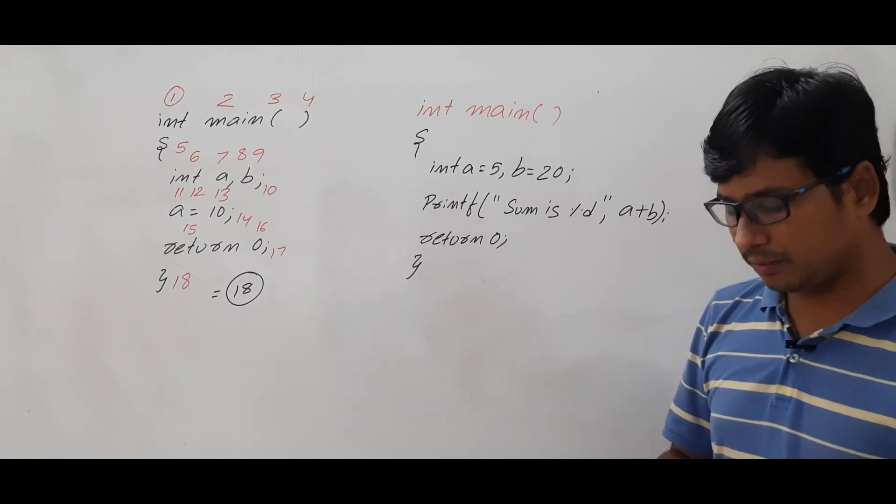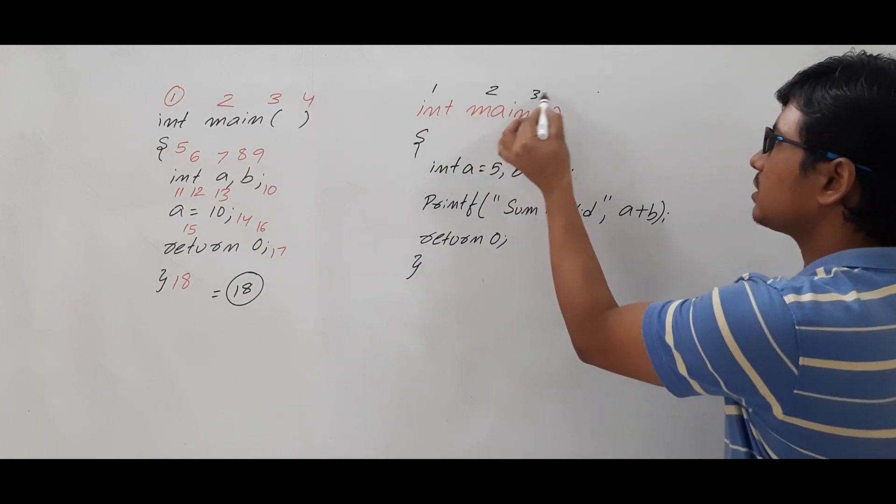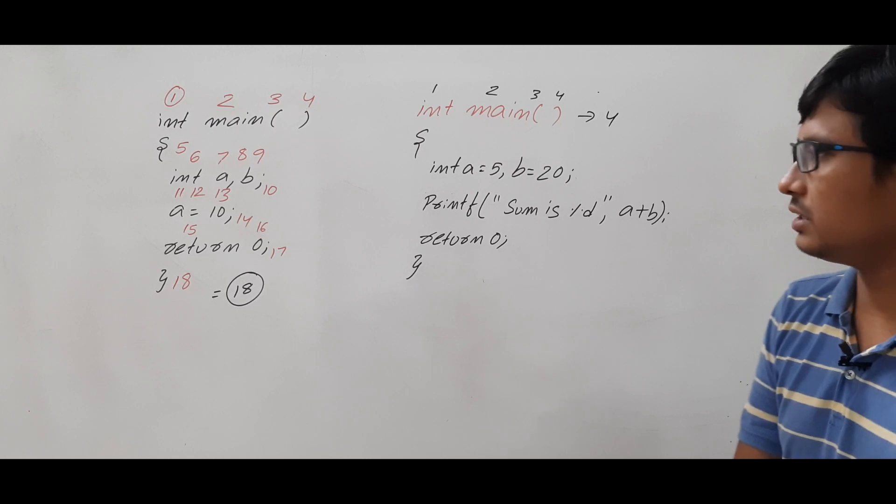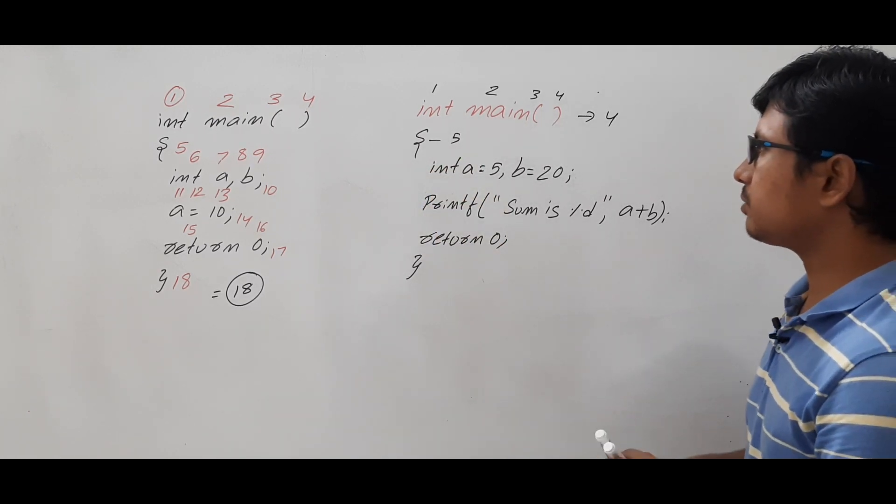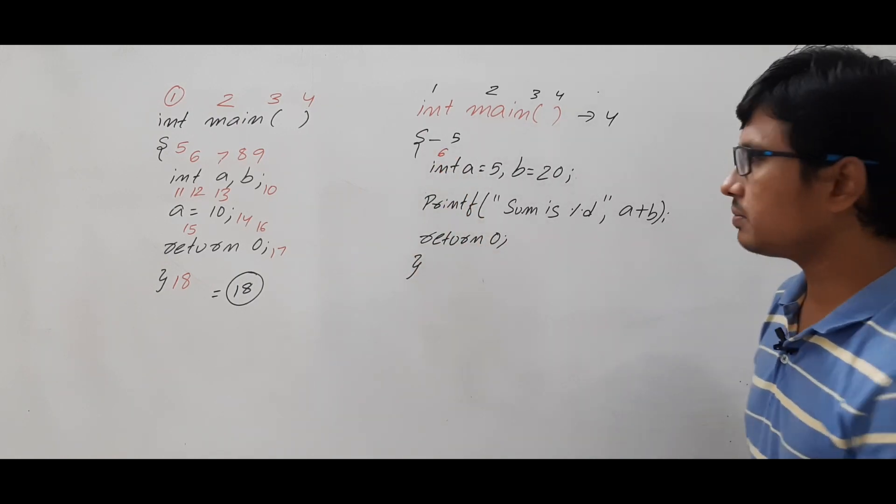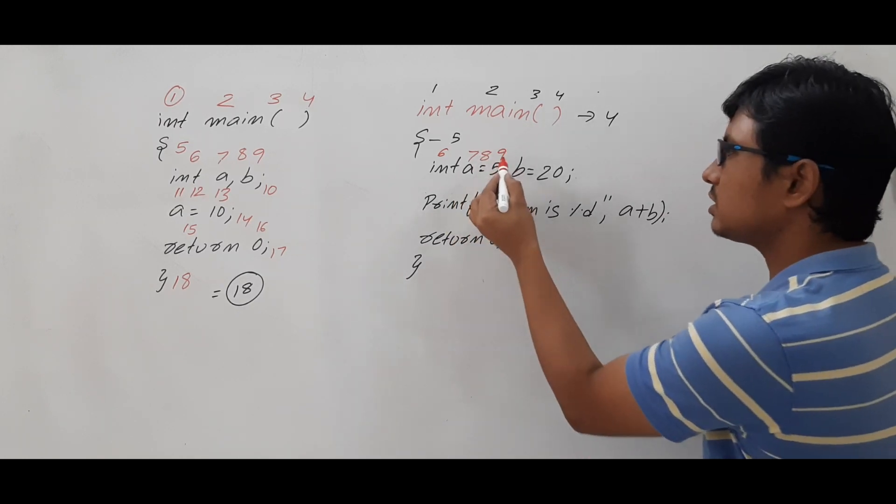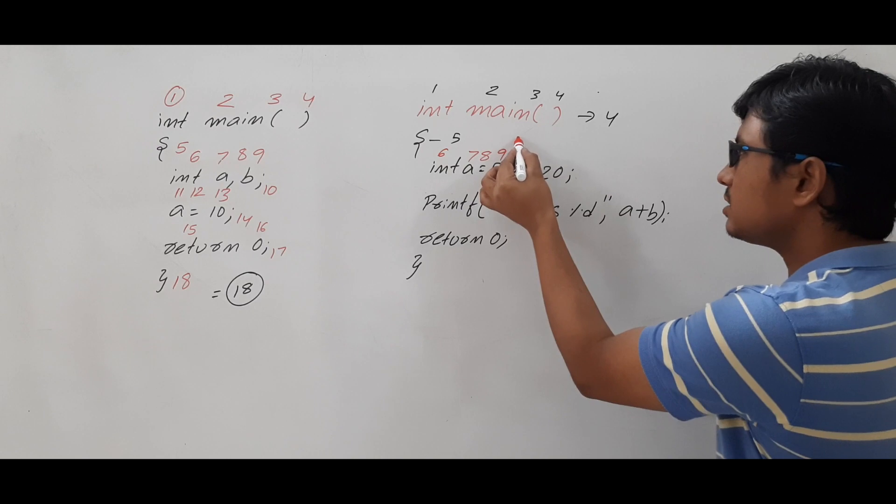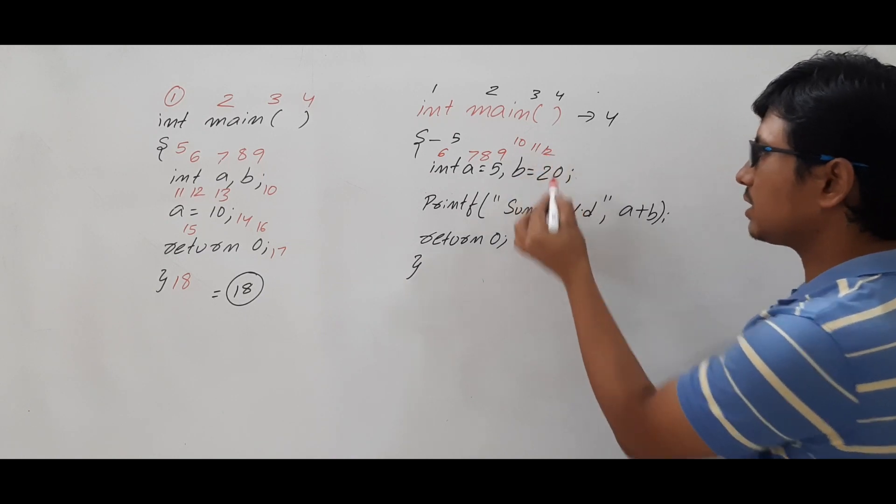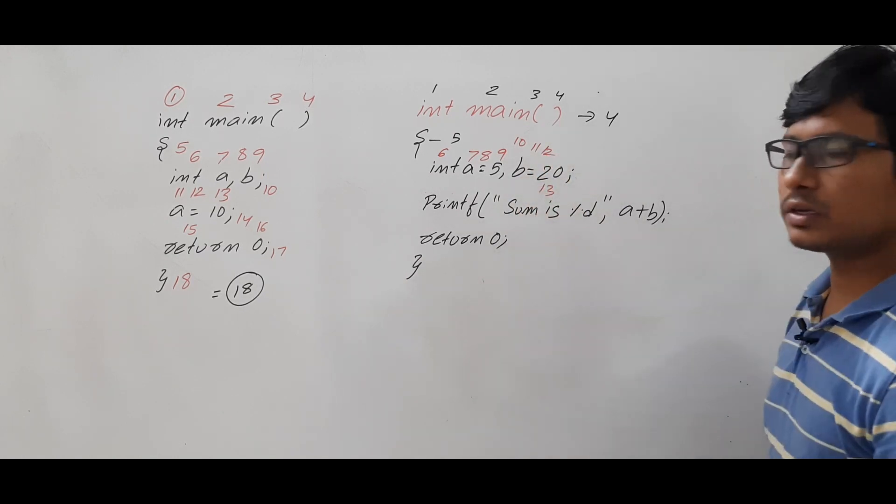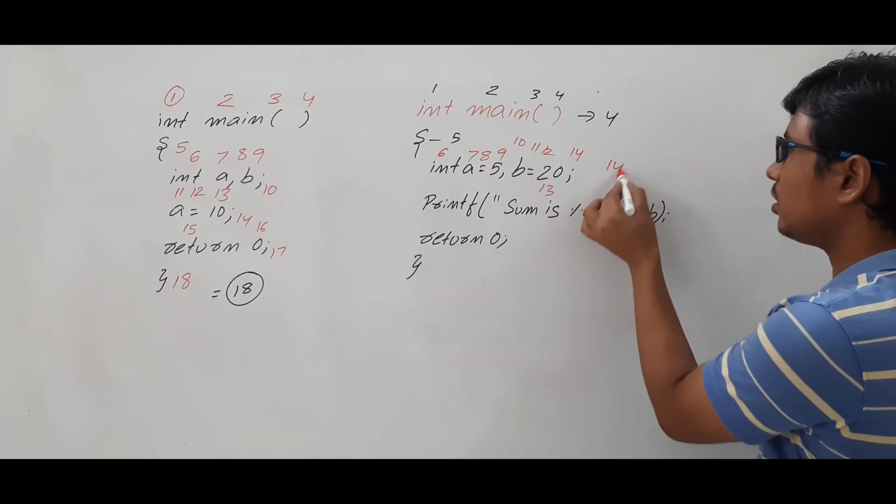First let me count the number of tokens. This is token number one, token number two, token number three, token number four - so totally we got four tokens here. And this is the fifth token. Int is another token, let me use a different color. Int is another token, a is another token, equal to is another token, and five is a constant - another token, and comma is another token. Is it clear? Then b is another token, equal to is another token, constant 20 is another token, and this is another token. So total here I got 14 tokens.